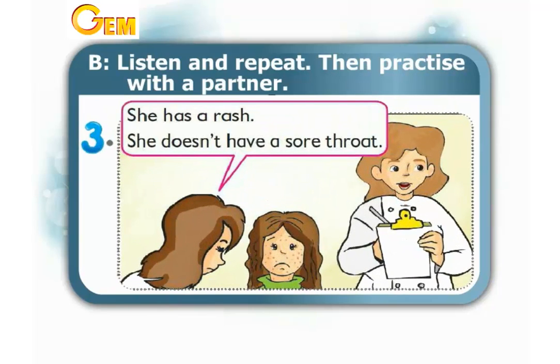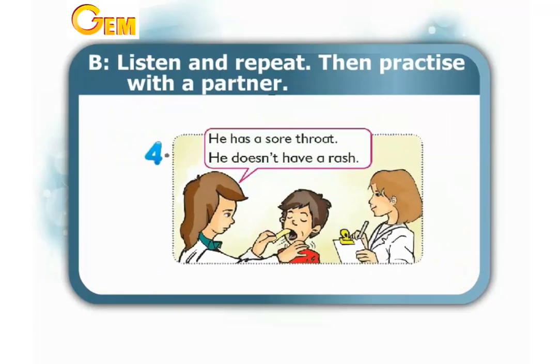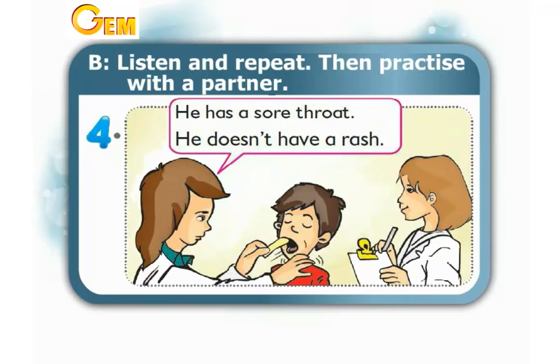3. She has a rash. She doesn't have a sore throat. 4. He has a sore throat. He doesn't have a rash.